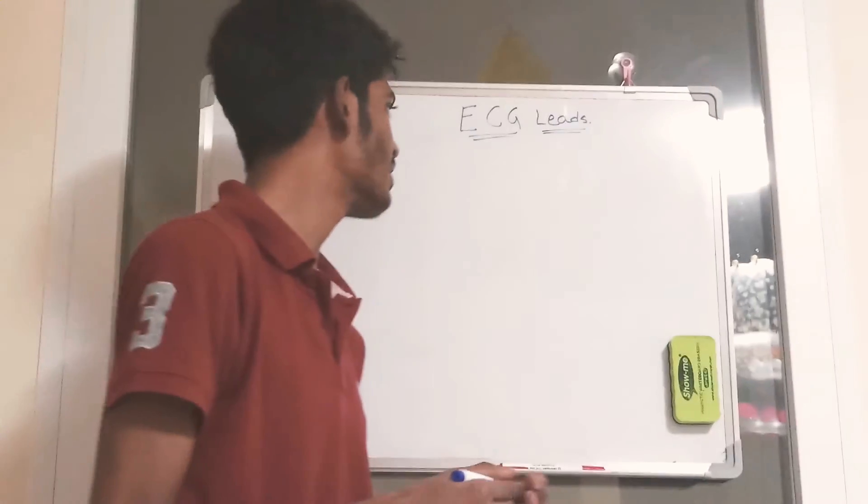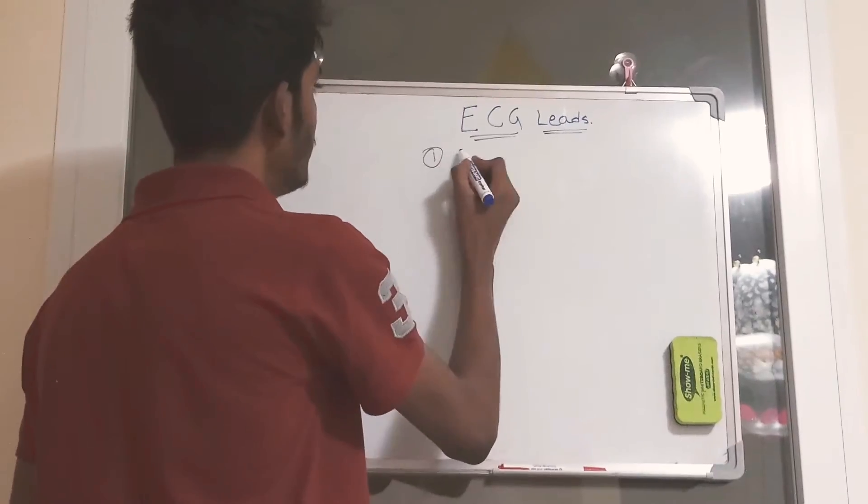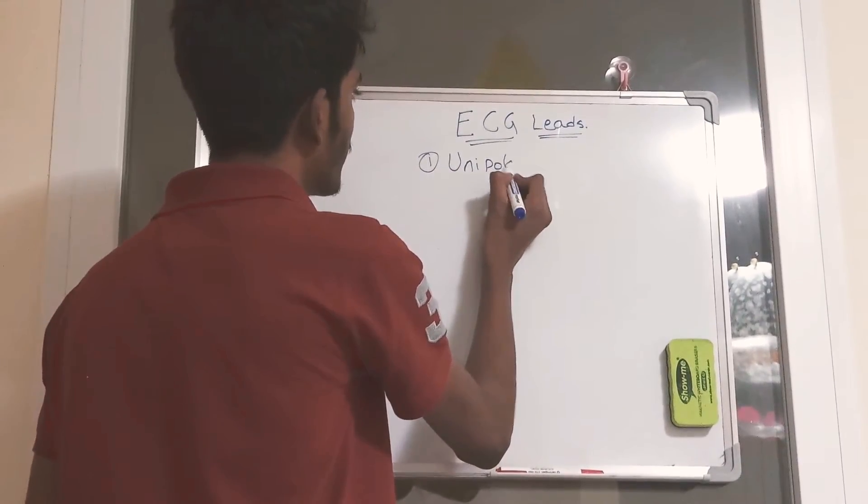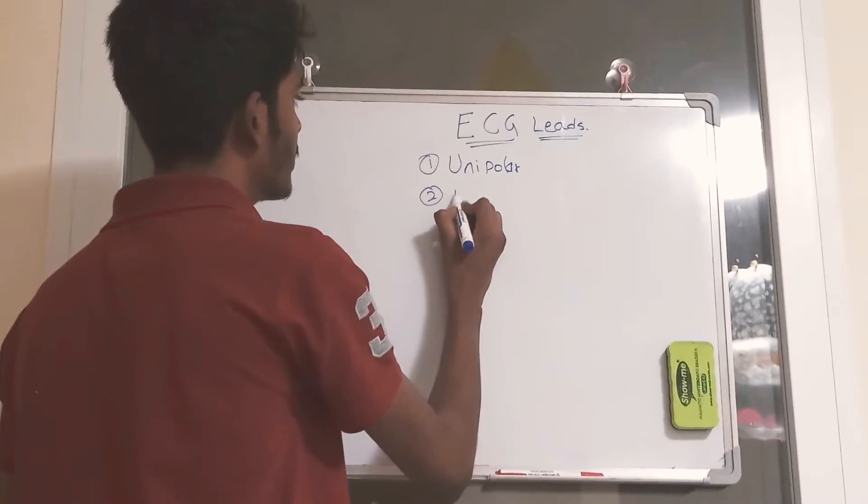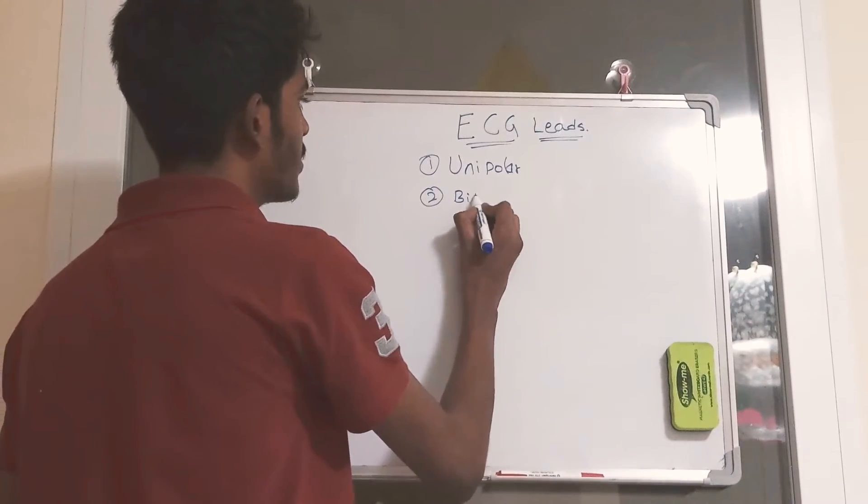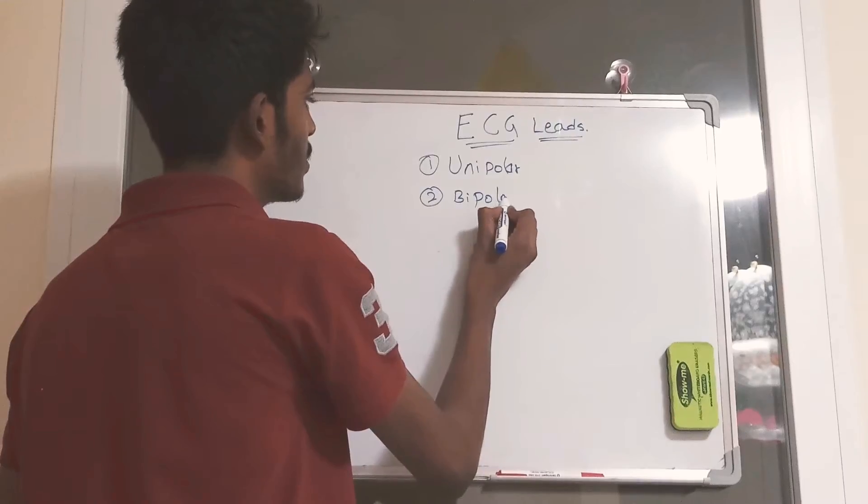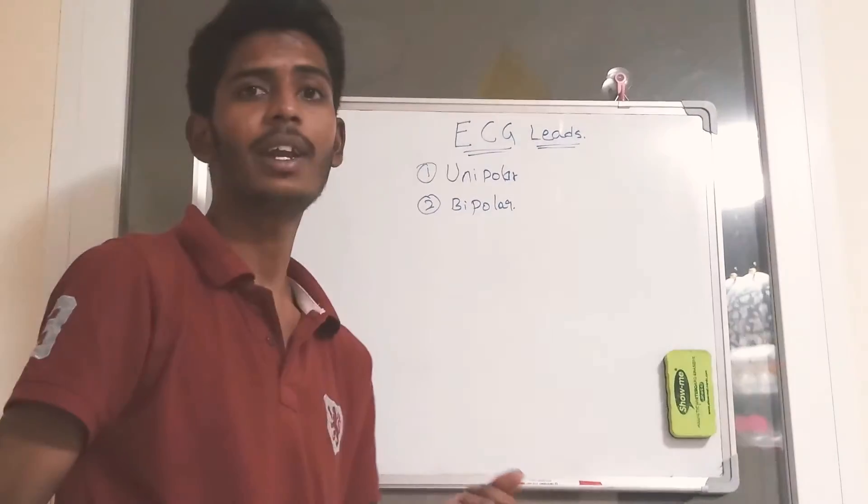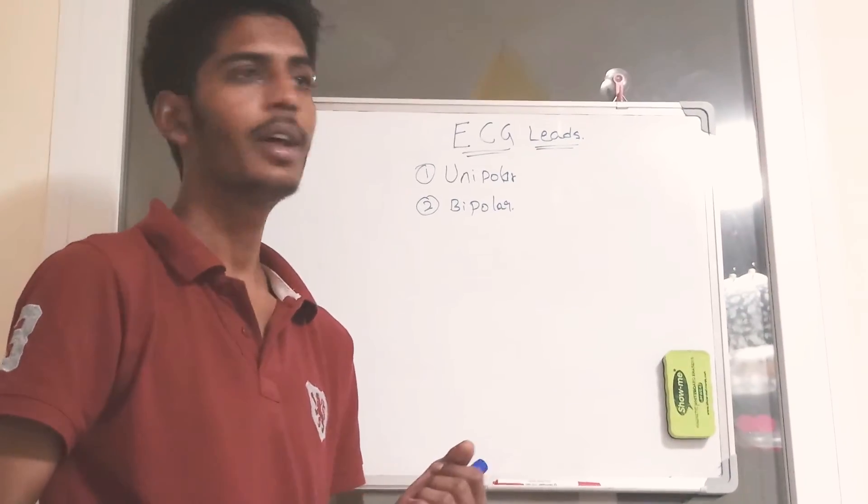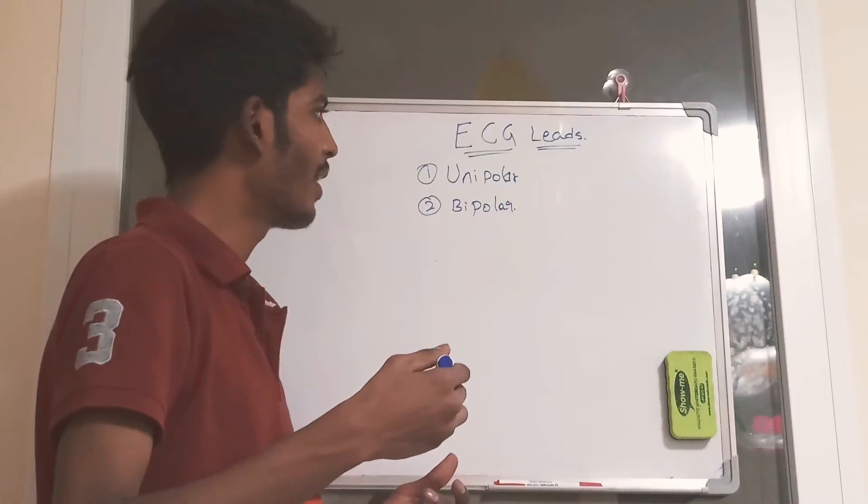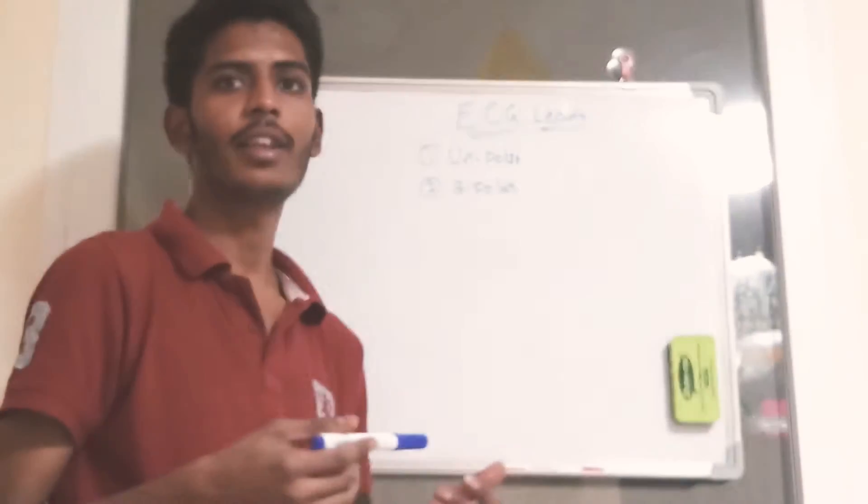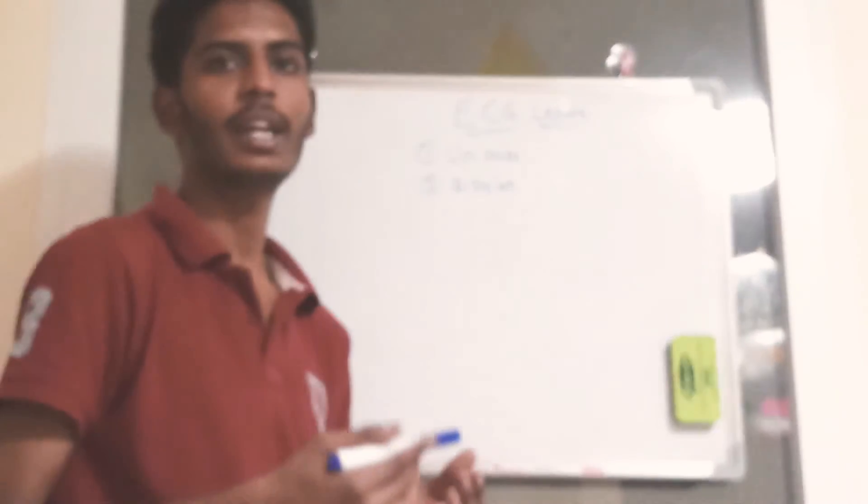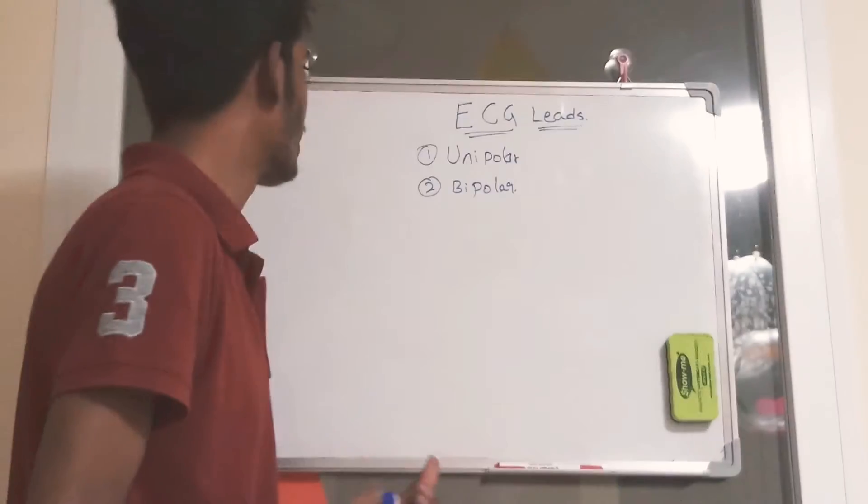The leads are classified into two types. One is unipolar leads, the other one is bipolar leads. The word itself says unipolar lead has one electrode. One electrode is a true electrode, the other one is a pseudo-electrode. And bipolar lead has two electric poles: one is positive and one is negative.